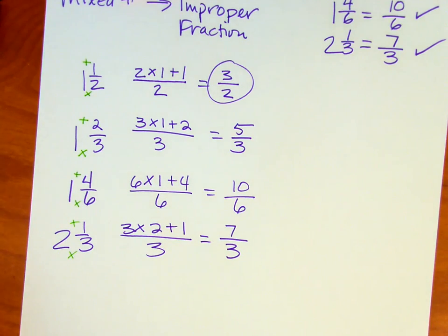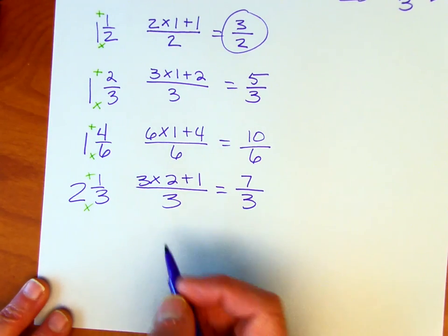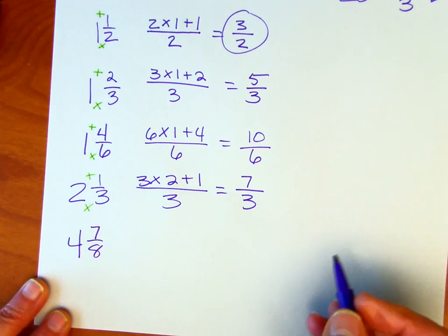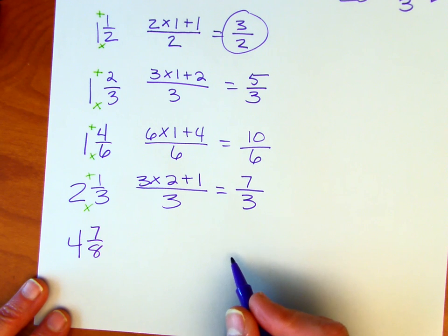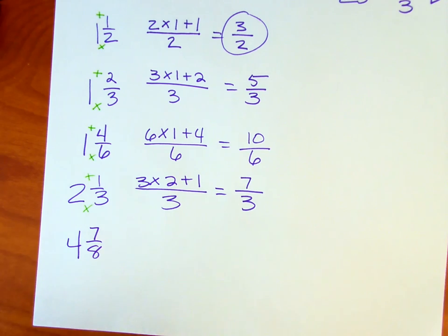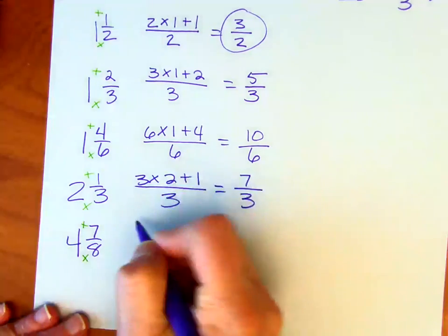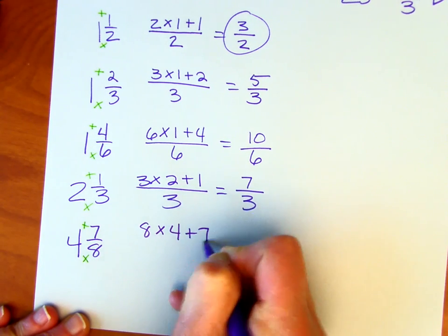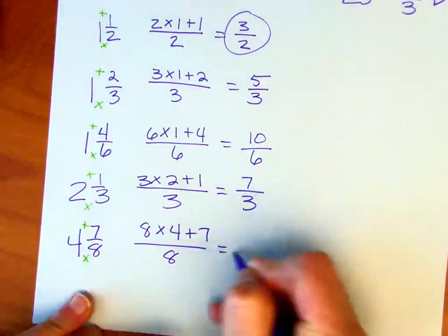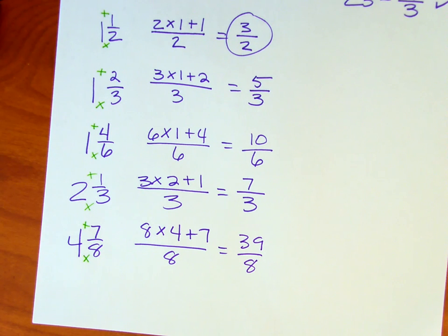Let me go ahead and give you one that we did not do in the model and see if you can come up with the correct answer. And let's say we have four and seven-eighths. What is that going to be as an improper fraction? So you can pause the video here if you want to work on it. I'm going to go ahead and do the problem. Eight times four plus seven over eight, that's thirty-two plus seven is thirty-nine, thirty-nine-eighths.